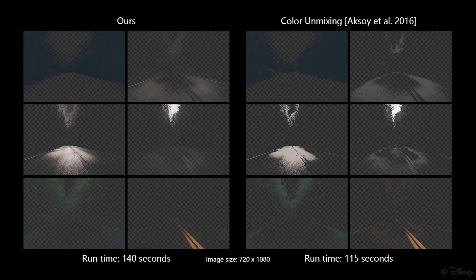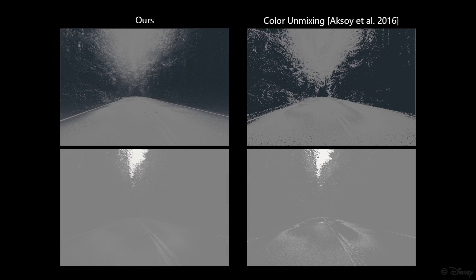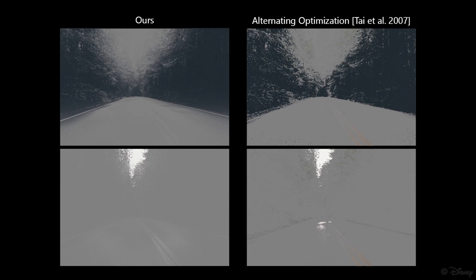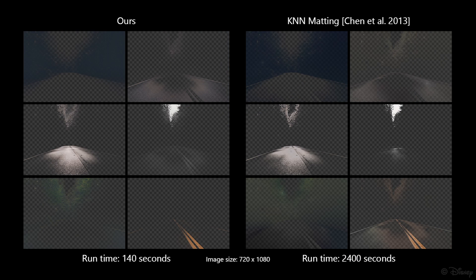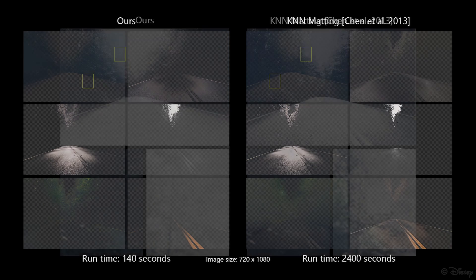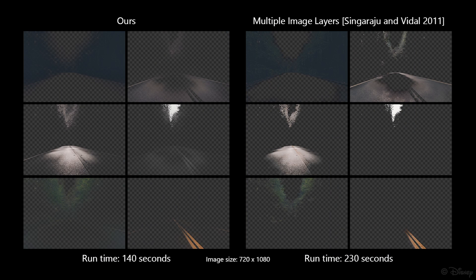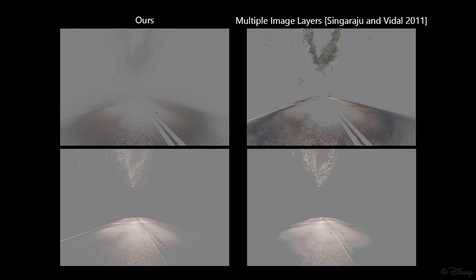We compare our algorithm with five methods that can be applied to soft color segmentation. While the computation time of our method is higher than the color unmixing, the difference between the layer qualities is significant. The alternating optimization method runs much slower and shows notable color homogeneity and smoothness issues. KNN matting also suffers from impractical runtimes and quality issues, a characteristic issue coming from the hard constraints on the alpha values. The multiple image layers estimation method tends to put too much emphasis on spatial coherency, causing the yellow of the road lines to be included in other layers.